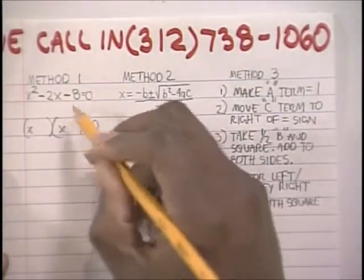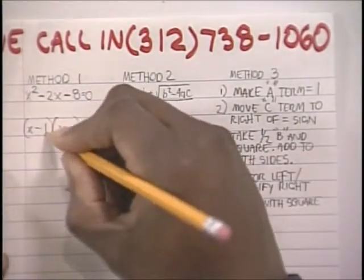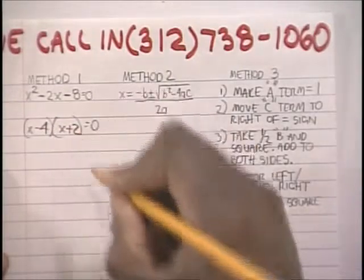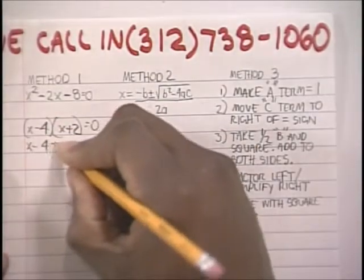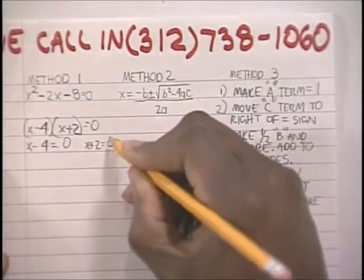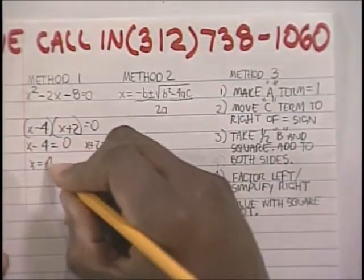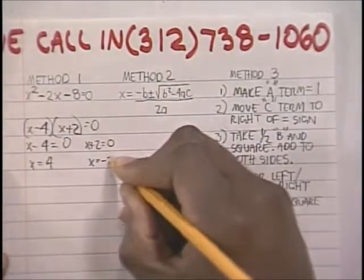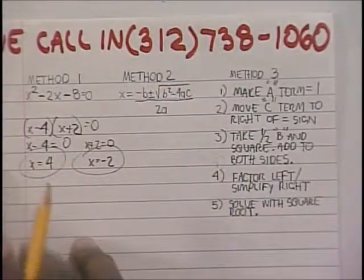You need two numbers multiplied together to give you negative 8. Try negative 4 plus 2, and then you set x minus 4 equal to 0, and x plus 2 equal to 0. You get x equals 4 and x equals negative 2. Final answer.